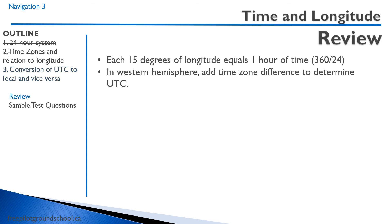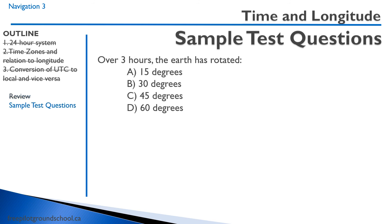Quick review: each 15 degrees of longitude equals one hour of time — that's 360 degrees divided by 24 hours a day. In the Western Hemisphere, add the time zone difference to determine UTC. First test question: over three hours, the Earth has rotated. The Earth rotates 15 degrees per hour — 360 degrees in 24 hours — so three times 15 equals 45 degrees.